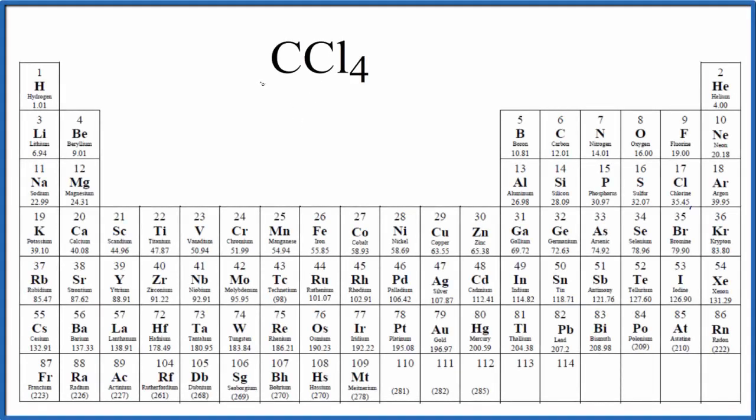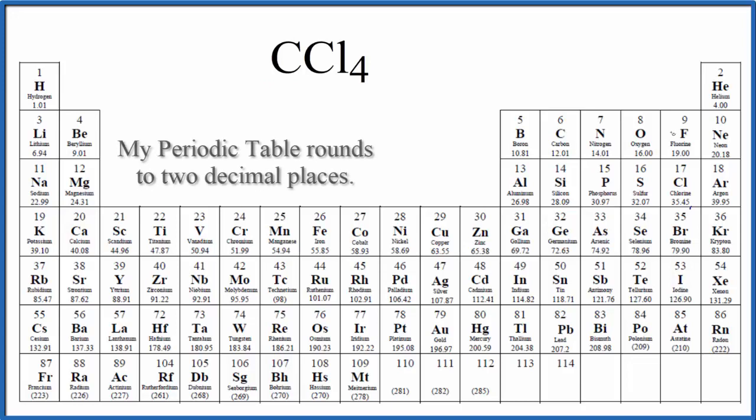In this video, we'll find the molar mass for CCl4, carbon tetrachloride. When we find molar mass, we go to the periodic table and find carbon. Carbon is right here, it's 12.01, and the units are grams per mole, but I won't write that each time. Let's write that at the end.